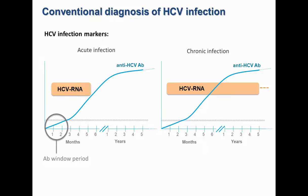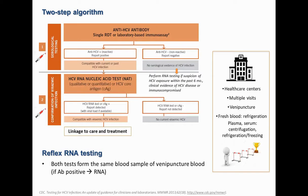Turning to diagnosis: upon infection, HCV RNA is the first marker to become detectable. In acute infection, which may be spontaneously cleared, this RNA will become undetectable, while the antibody response generated against the virus will generally be detectable for a lifetime. Most infected individuals, however, will go on to develop a chronic infection, in which case HCV RNA persists beyond the first six months of infection.